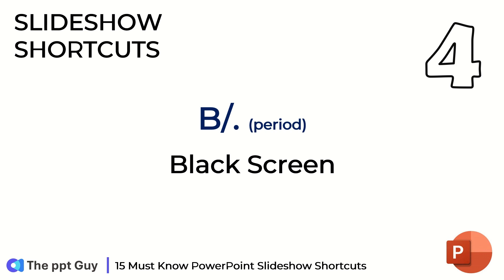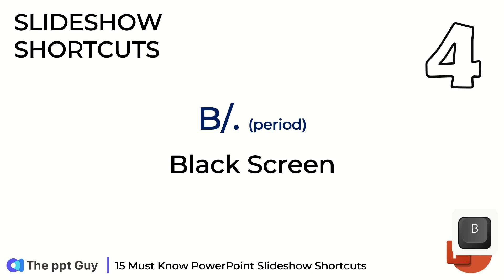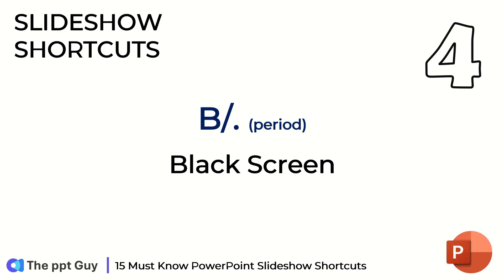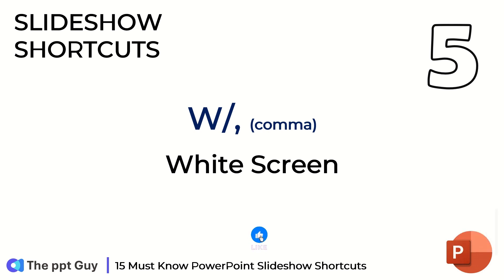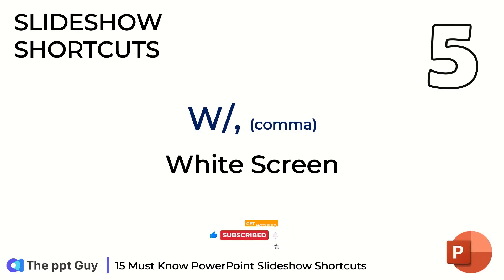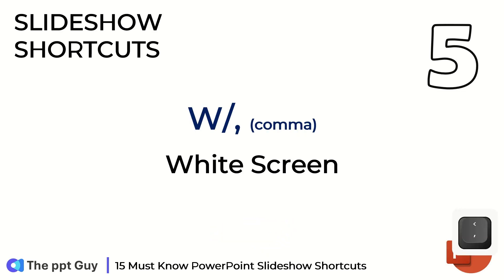Most of you don't know shortcut number 4 — just press B and your slideshow will go black. If you press B again, the slideshow is back. You can do the same by pressing the period button. Shortcut number 5: just press W and your slideshow will go white. If you press W again, the slideshow is back. You can do the same by pressing the comma button.